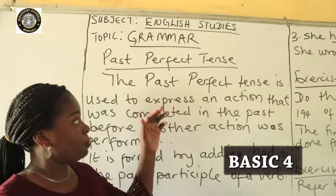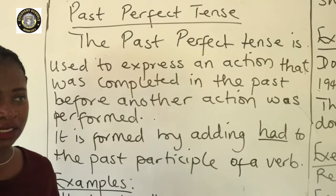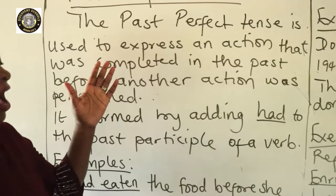As we all know, we have the present tense, the past tense, we have the future tense, then we have the present perfect tense and the past perfect tense. The past perfect tense is used to express an action that was completed in the past before another action was performed.